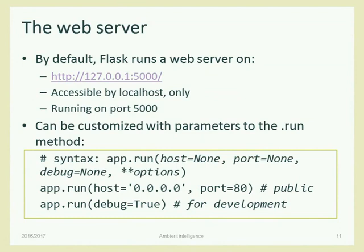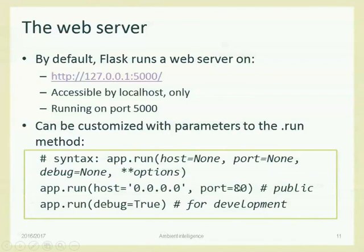Setting host to 0.0.0.0 means the web server should be reachable on all internet interfaces — not just localhost, but also Wi-Fi, Ethernet, and so on. You can also publish on port 80, which is the default HTTP port, so users don't need to write colon 5000. We do that only when running the web server publicly. In the development phase, we can add the debug=True parameter to the application's run method, which instructs the web server to be more verbose and show detailed error messages.